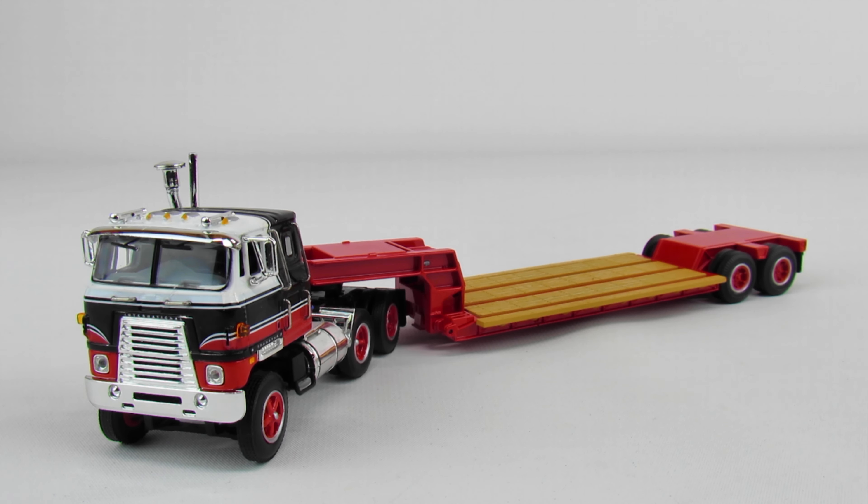This is an International Harvester Transtar 2 tractor with a Rogers lowboy trailer. It was made by Diecast Formations in 1:64 scale. This set is awesome - I love old school cabovers.